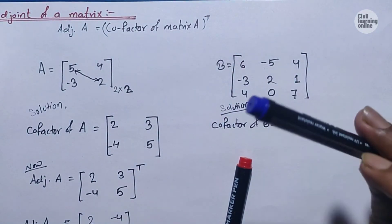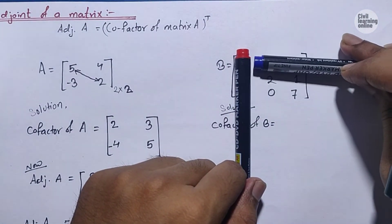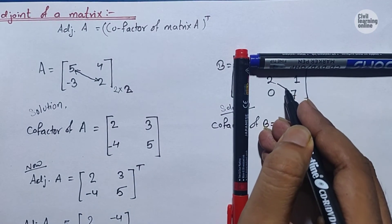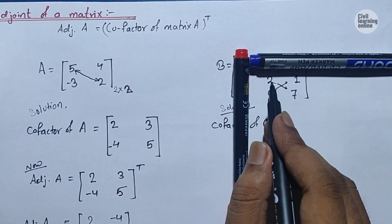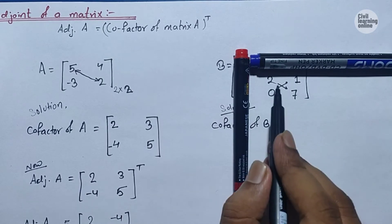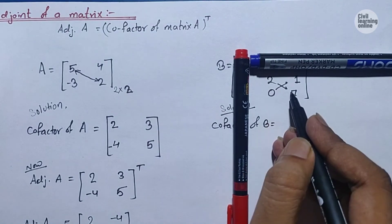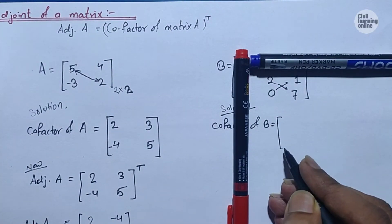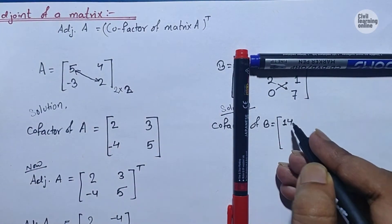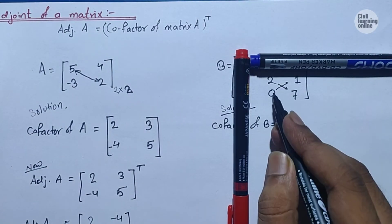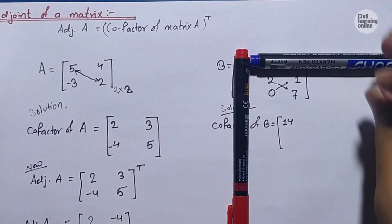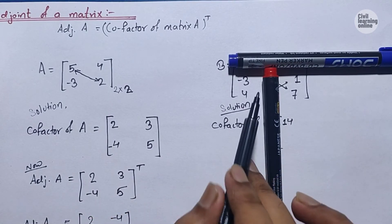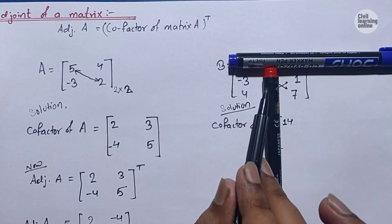After covering the row and column containing 6, we multiply the remaining elements: 2 times 7 equals 14, and then subtract 0 times 1 which is 0. So the cofactor of element 6 is 14. For the second element, -5, cover its row and column. Then multiply: -3 times 7 equals -21, and the upward cross-product is 4 times 1 equals 4 with a minus sign, giving -4. So we have -21 minus 4, but applying the sign convention gives -21 + 4 = -25... wait, the result noted is -25.